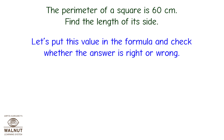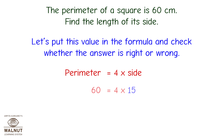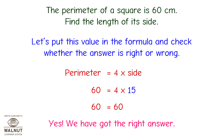Let's put this value in the formula and check whether the answer is right or wrong. Perimeter is equal to 4 multiplied by side. So 60 is equal to 4 multiplied by 15. So 60 is equal to 60. Yes, we have got the right answer.